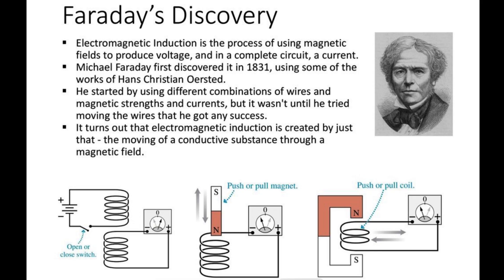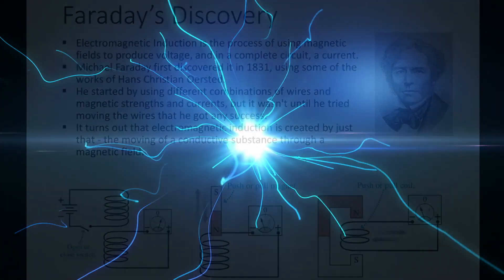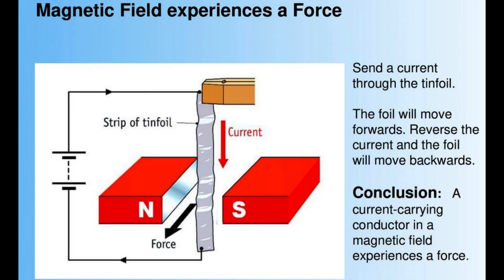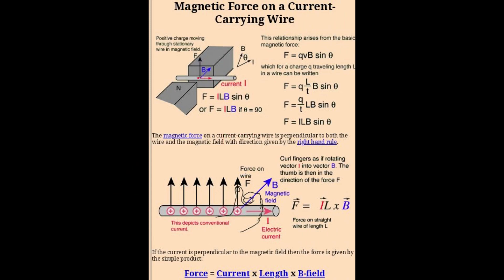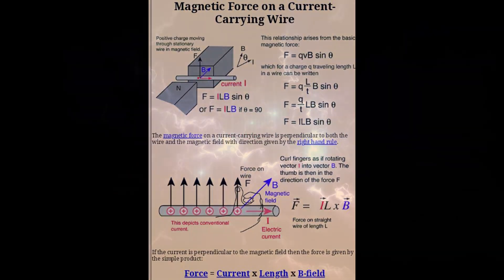What is electrical induction? Electrical induction is the process by which an electric current is generated in a conductor when it is exposed to a changing magnetic field. This phenomenon was first discovered by Michael Faraday in the 19th century and is known as Faraday's law of induction.